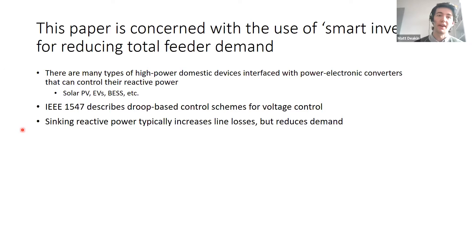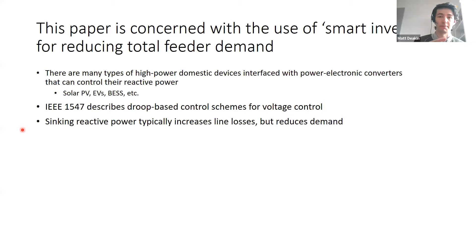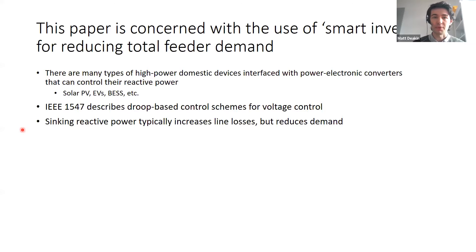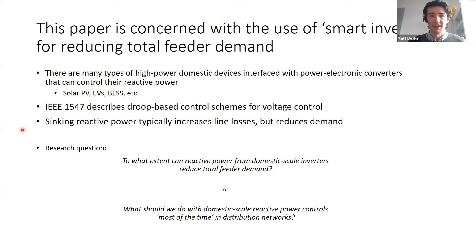The interesting thing we're trying to look at is that on the one hand, if you sink reactive power, you increase the line losses, but you tend to reduce demand if you assume that demand reduces with voltage — there's lots of experimental evidence that suggests that is true. With that in mind, we come to the research question: to what extent can reactive power from domestic scale inverters reduce total feeder demand? Or on a high level, what should we do with domestic scale reactive power control in distribution networks?